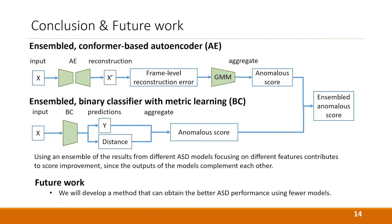In conclusion, we proposed an ensemble ASD approach using both a conformer-based autoencoder and a binary classification model with metric learning. We found that using an ensemble of results from different ASD methods focusing on different features contributes to score improvement, since the outputs of the models complement each other. In future work, we will develop a method that can obtain better ASD performance using fewer models. Thank you.